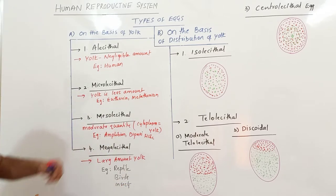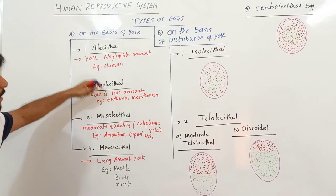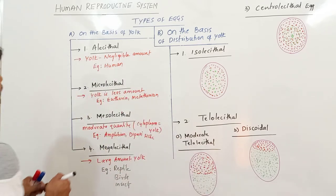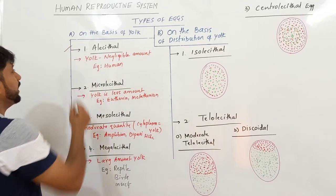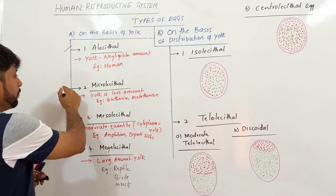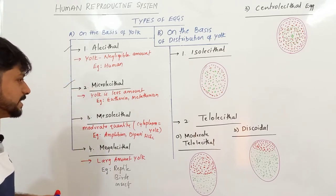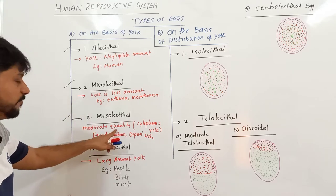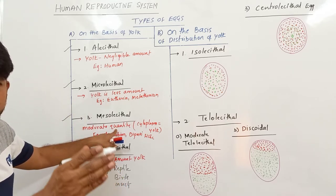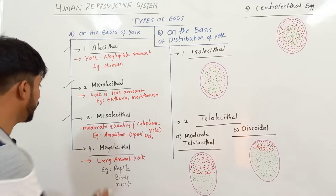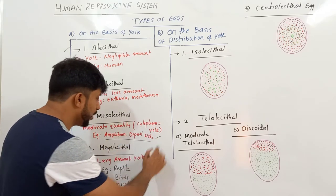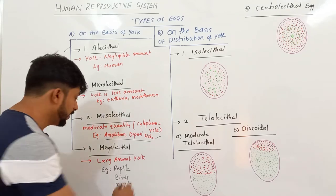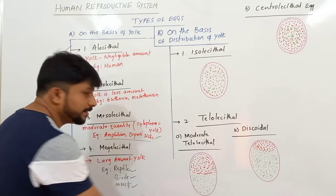So, based on the amount of yolk, eggs are classified into Alicethal eggs with negligible yolk, Microlicethal with very less yolk, Mesolicethal with moderate quantity where cytoplasm and yolk are almost equal in Amphibians and Dipnoi fishes, and Megalicethal with large amount of yolk in reptiles, birds, and insects.